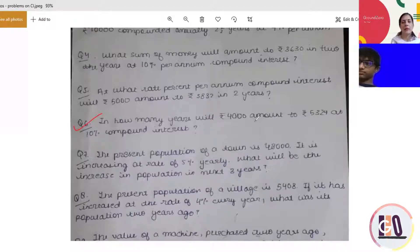So how many years will 4,000 amount to 5,324 at 10% compounded interest? So now they are asking you the years. So now you're trying to...